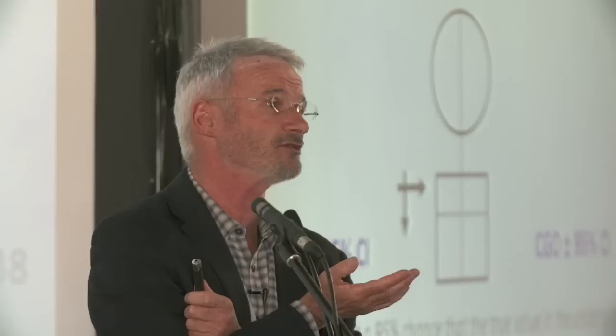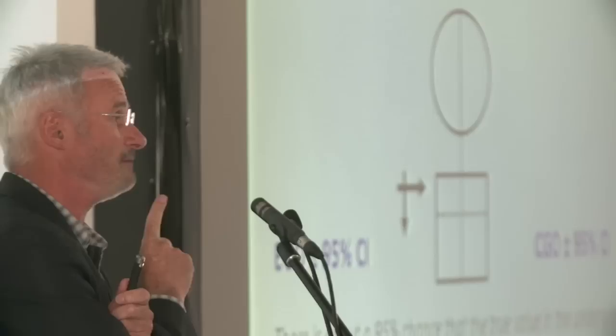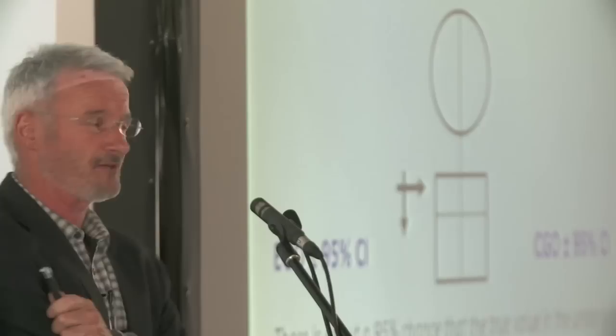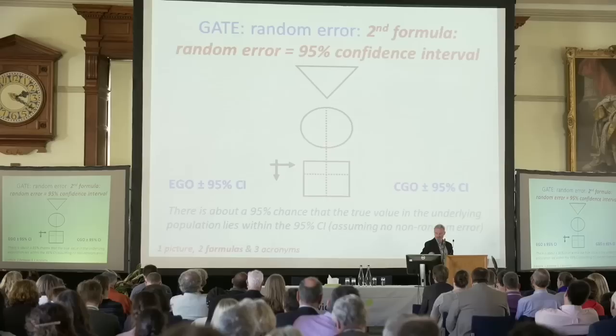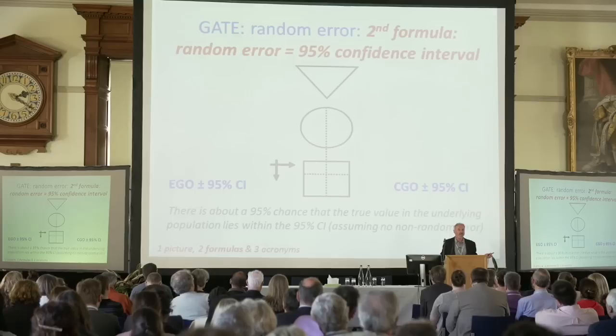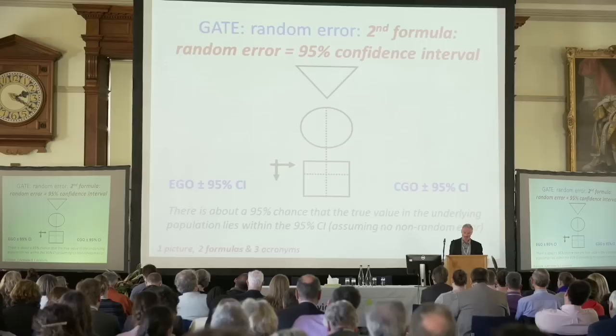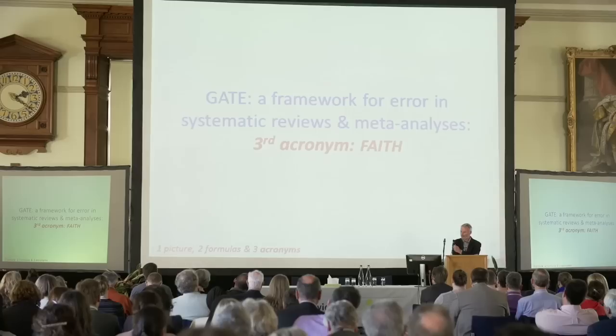My second formula — it's hardly a formula — is: random error equals 95% confidence interval. This is my one-slide lecture on statistics to medical students. There's about a 95% chance the true value in the underlying population lies within the 95% confidence interval, assuming no non-random error. Whenever you measure EGO and SEGO, you also need to look at the 95% confidence interval, because there's always uncertainty. That's my slide for medical students on statistics.